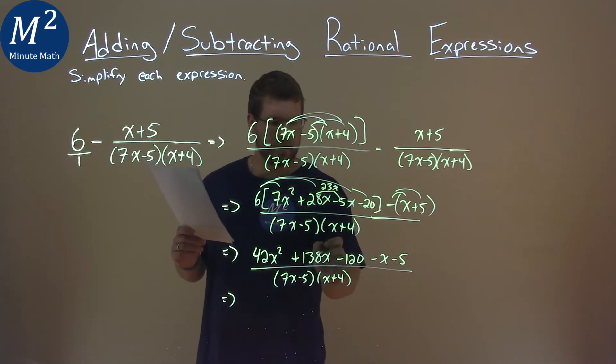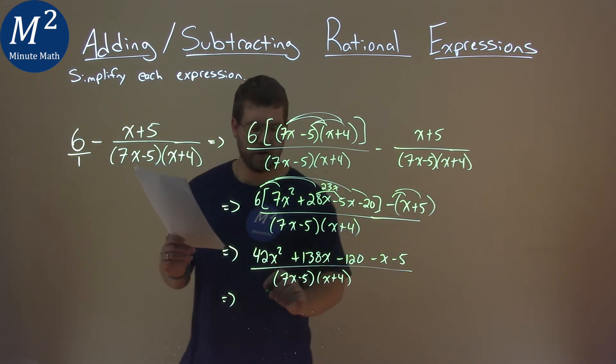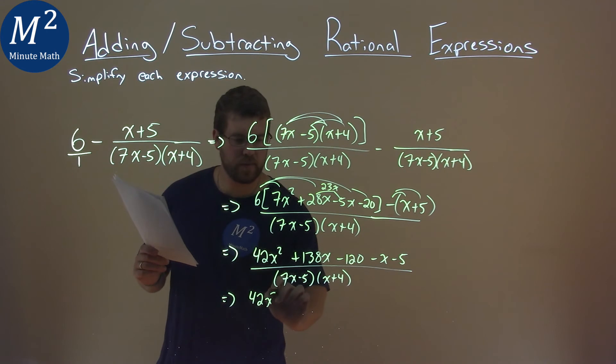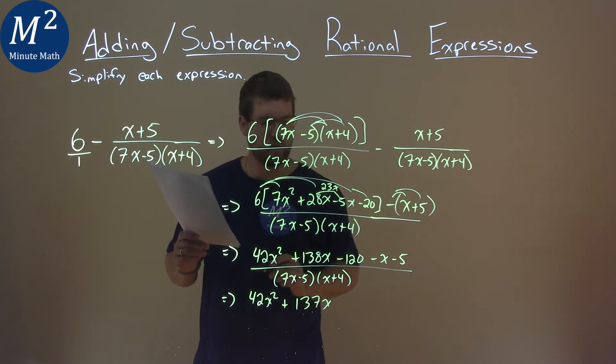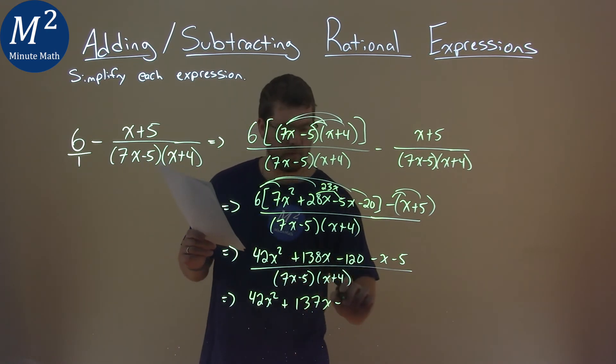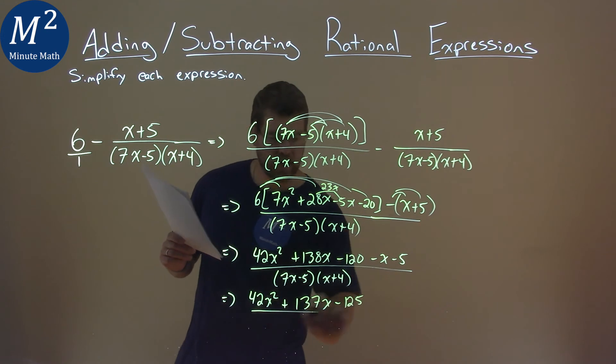We have the negative x and 138x, and then negative 20 and negative 5. So 42x squared here, plus 138x minus 1x is 137x, negative 120 minus 5 is negative 125, and our denominator stays the same, 7x minus 5 and x plus 4.